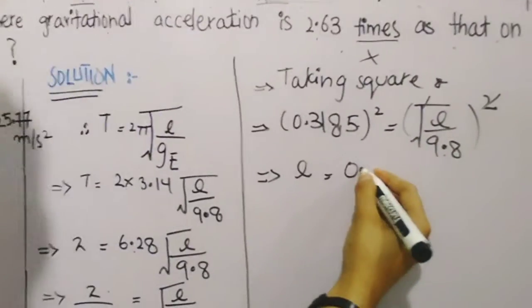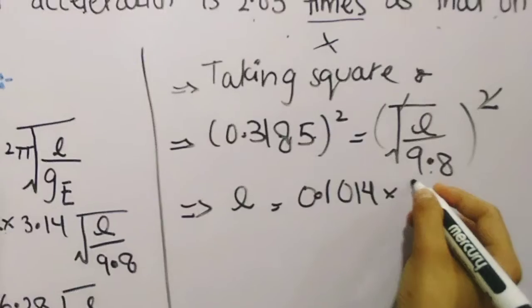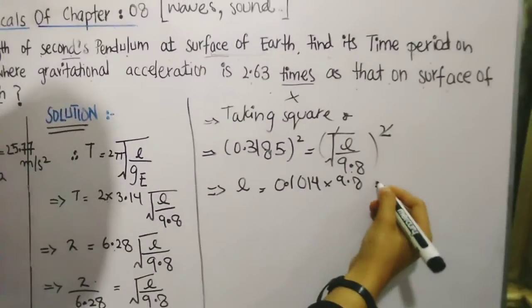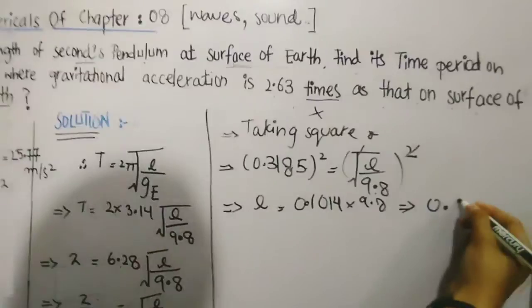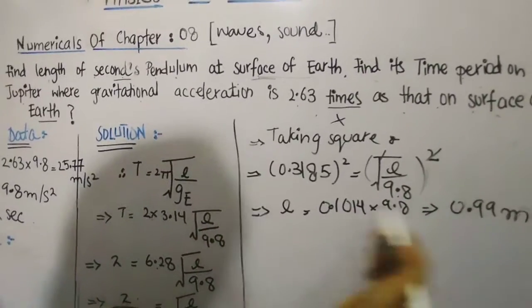So L is equal to 0.1014 times 9.8, which equals 0.99 meters. We can verify the second pendulum length is 0.99 meters. First part is complete.